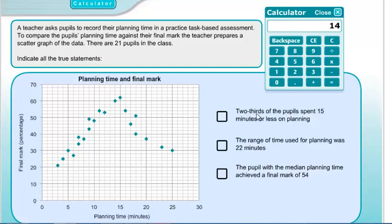So we need 14 pupils who spent 15 minutes or less on planning. Looking at the graph at the 15-minute mark, counting all students at or below that value: one, two, three, four, five, six, seven, eight, nine, ten, eleven, twelve, thirteen, fourteen. That's exactly 14, so that is a true statement.